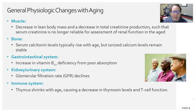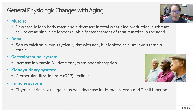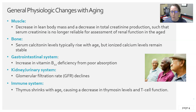In the immune system, the thymus shrinks with age. The thymus is largest in infancy and very active during childhood, helping to build the immune system. As we become adults, it shrinks progressively. This causes a decrease in thymus activity and a decrease in T cell function, which results in a decreased immune system response.